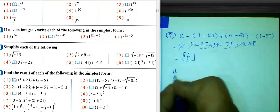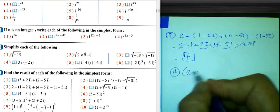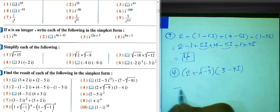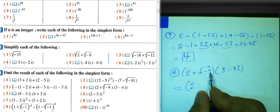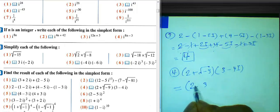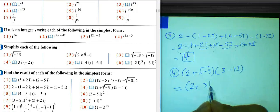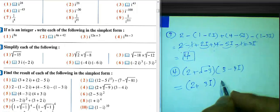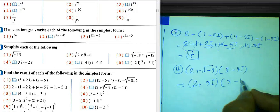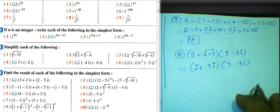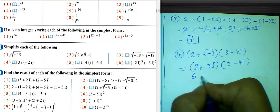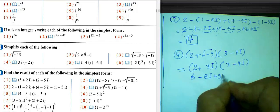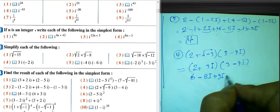Question 4: (2 + √(-9)) times (3 minus 4i). √9 equals 3, so √(-9) equals 3i. We have (2 + 3i)(3 minus 4i). Distributing: 2 times 3 equals 6, 2 times negative 4i equals negative 8i, 3i times 3 equals 9i, and 3i times negative 4i equals negative 12i^2.